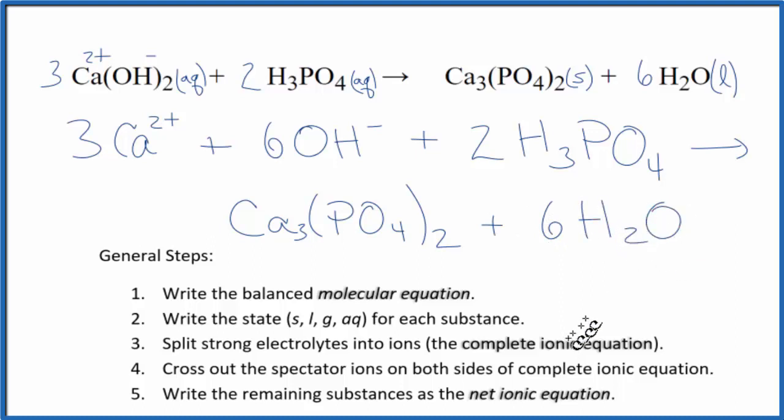So this is our complete or total ionic equation. Next, we would cross out these spectator ions that appear on both sides of our complete ionic. The thing is, there's nothing that appears on both sides. I have 3 calcium ions. I don't have them here by themselves as calcium ions. I don't have 6 separate hydroxide ions here. And there's no phosphoric acid on the side either. So the complete ionic equation is also the net ionic equation in this case.